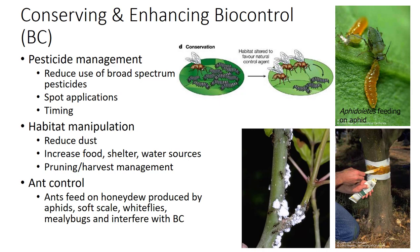For good survival and high reproduction, natural enemies often require shelter, alternative food sources, water, overwintering sites, and other conditions. Natural enemies of honeydew-producing insects such as aphids, soft scales, whiteflies, and mealybugs may also require protection from ants.